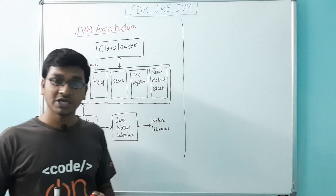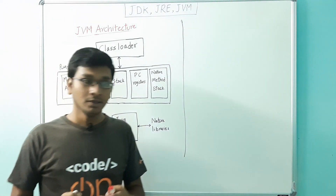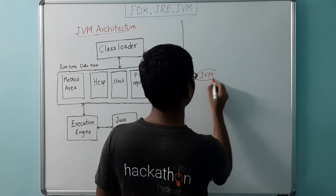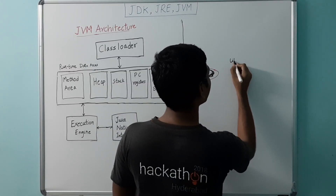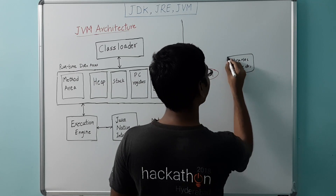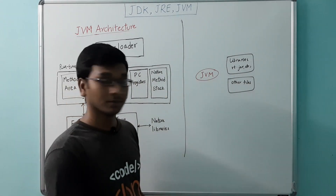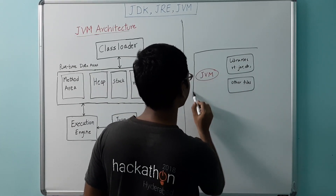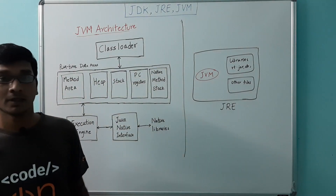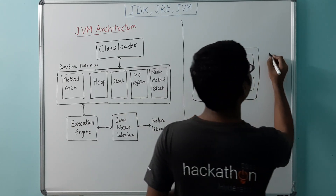Now let us discuss about JRE. JRE is Java Runtime Environment and it is a bundle of software components used to run Java applications. We can simply call it an implementation of JVM. So JVM uses libraries like rt.jar and some other files, and actually executes the programs. This whole set we can call JRE. And what is JDK? JDK is Java Development Kit, and it provides development tools for developers to develop Java applications, such as the compiler.